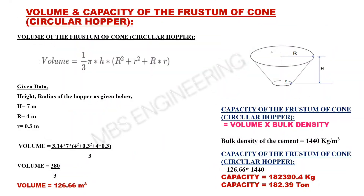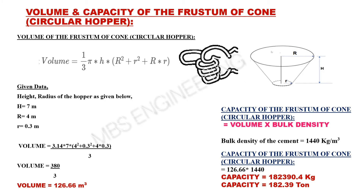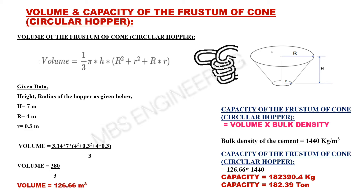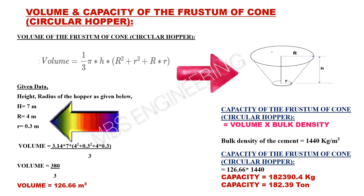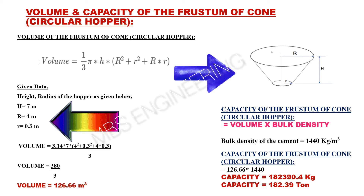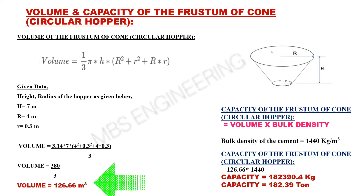Next, we learn about how to calculate the volume and capacity of the frustum of cone or circular hopper. The volume calculation formula for the frustum of cone or circular hopper is: Pi × H × (R² + r² + R×r) divided by 3. Please refer to the frustum of cone or circular hopper snaps and the given data. H is 7 meters, R is 4 meters, r is 0.3 meters. Based on the above equation and given data, the volume of the frustum of cone or circular hopper is 126.66 cubic meters.